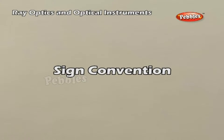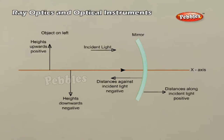Sign Convention. According to the Cartesian sign convention, all distances are measured from the pole of the mirror or the optical centre of the lens. The distances measured in the same direction as the incident light are taken as positive and those measured in the direction opposite to the direction of incident light are taken as negative. The heights measured upwards with respect to the principal axis are taken as positive, and those measured downwards are taken as negative.